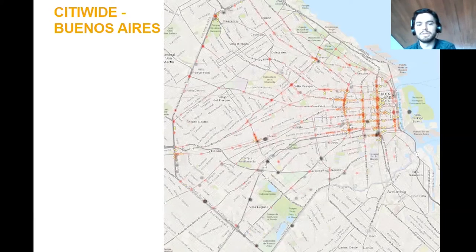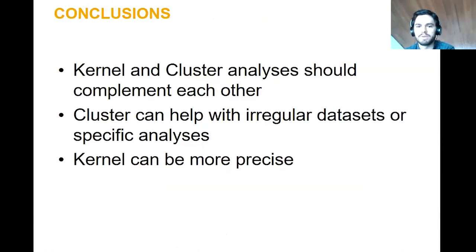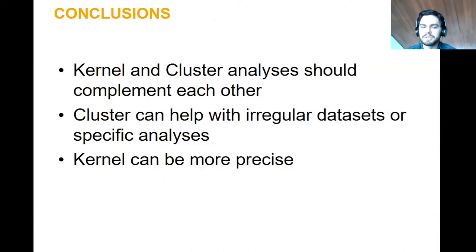One of the conclusions is that it's better to use the total amount of injuries or killed and seriously injured. Both fatalities and injured are very concentrated in some locations — this is why it's important to use data. Kernel and cluster, the two tools I showed, should complement each other. Cluster can help you with regular datasets even if you only have one or two years of data. Kernel can be more precise and tells you exactly the locations, but it depends on how you use the tool.